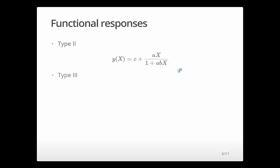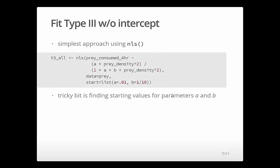That's a Type 2 function. The Type 3 is the same, except that now it has the X squared. So the difference between these two is that this one just rises to an asymptote. This one accelerates initially and then flattens off to an asymptote. So let's just pick one of those. We're going to use the Type 3 model without the intercept. We'll ignore the C for the moment. What that means is that when prey are zero, the assumption is that the consumption rate of the predator is also zero, which is a reasonable sort of assumption.